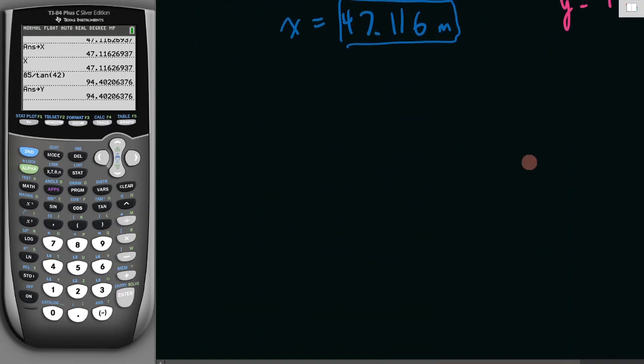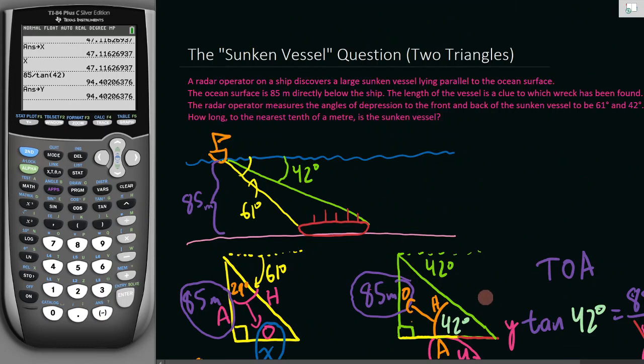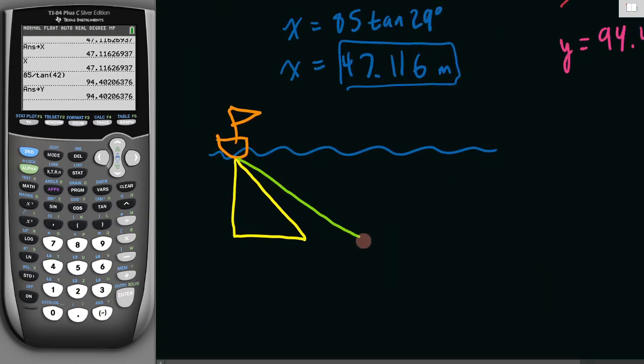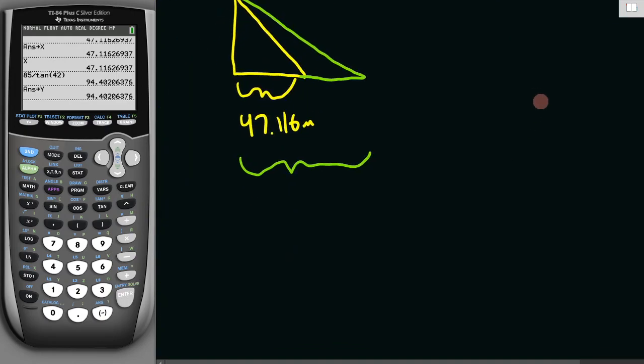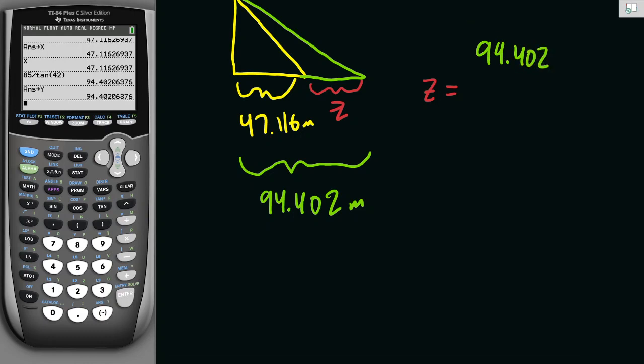Let's go back to our original diagram. We've got our boat up here and we have two triangles. We know that this is 47.116 meters, and we know that this whole thing across here was 94.402 meters. So then what we want to solve, let's call it Z. Z is going to be 94.402 minus the 47.116 that we have there.